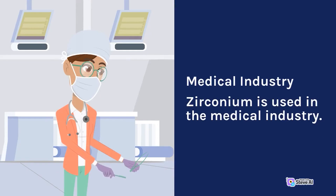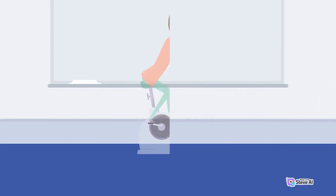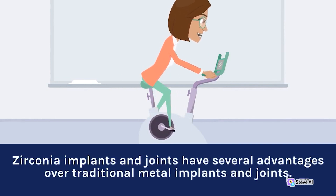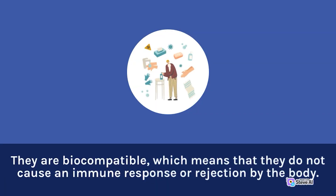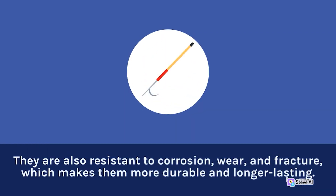Medical Industry. Zirconium is used in the medical industry. Zirconia is used as a ceramic material in the manufacture of dental implants and artificial joints. Zirconia implants and joints have several advantages over traditional metal implants and joints. They are biocompatible, which means that they do not cause an immune response or rejection by the body. They are also resistant to corrosion, wear, and fracture, which makes them more durable and longer-lasting.